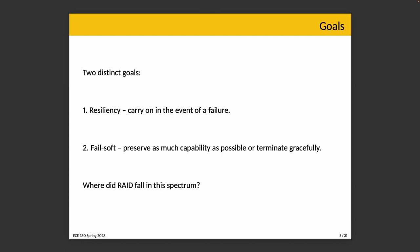There are two distinct goals here that are not really the same thing. One of them is resiliency — the system is capable of carrying on even in the event of a failure, even if not at full capacity. And fail-soft operations says that if things do indeed fail, the system tries to preserve as much capability as possible, or it will terminate gracefully if it must — if there's no way to go on and it just makes sense to stop entirely.